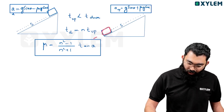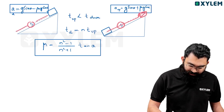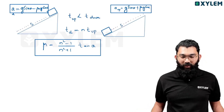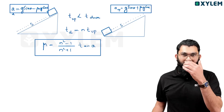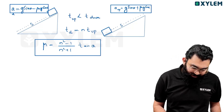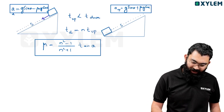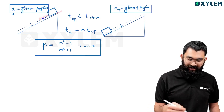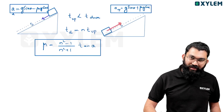Now the second concept: one angle of inclination, one height, same rough surface. A body is given initial velocity u upward along the inclined plane. The distance S is the same for both ascent and descent. The time of ascent and time of descent are different because the acceleration magnitudes differ. On the way up, both mg sin θ and friction μmg cos θ act downward — opposing motion. After canceling mass, the acceleration during ascent is g sin θ plus μg cos θ.